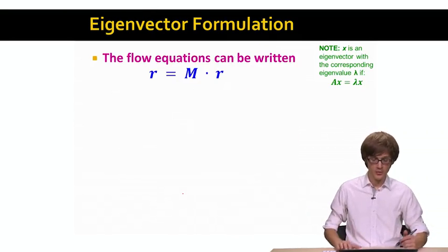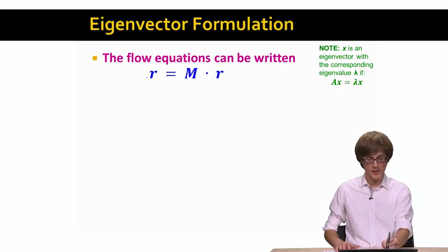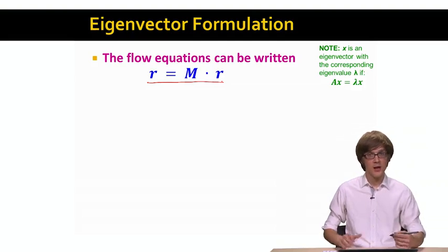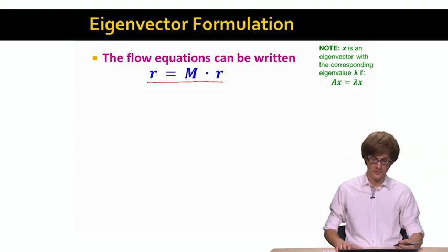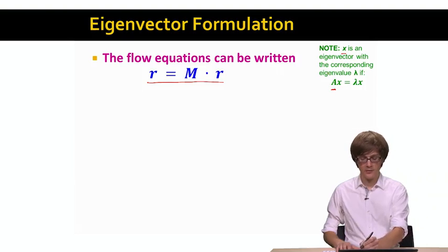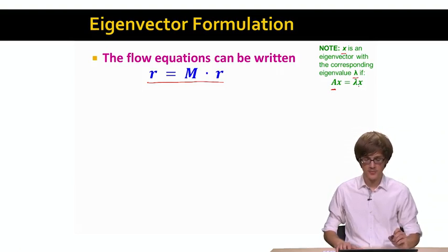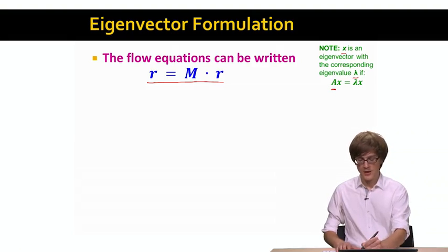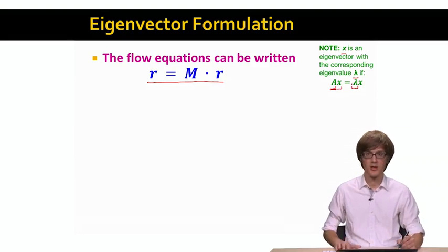We basically took our flow formulation of the problem and expressed it as this recursive, in a sense, matrix equation that R equals M times R. What we observe is that this looks very much like an eigenvalue problem. Let me remind you what are eigenvalues and eigenvectors of a given matrix. If I have a matrix A, then x is called an eigenvector with the corresponding eigenvalue lambda, if x is a solution to the equation A times x equals lambda x. A is a matrix that we are given. X is something that we'd like to compute, and it's a vector. Lambda is also something that we'd like to compute, and is a scalar, a real number or a complex number.